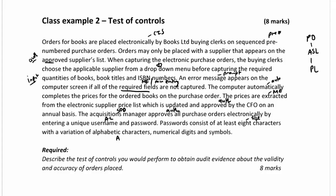Passwords must include a variation of alphabetic characters, numerical digits, and symbols — giving us an alphanumeric complexity control. You are required to have one of each of those character types.